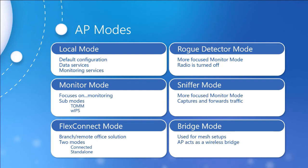Starting at the top of the second column, we have the rogue detector mode, which is a more focused version of monitor mode. In this case, ARP packets are captured to determine rogue status. This information can be collected and reported to a controller or another central device for further action. In this mode, the radio is turned off and only the access point is in a listening state.